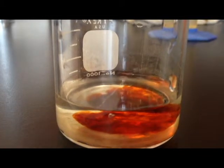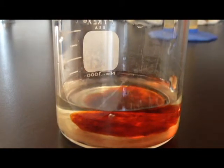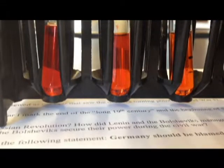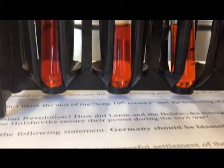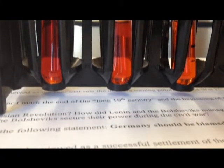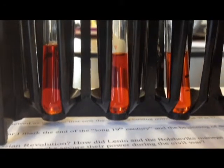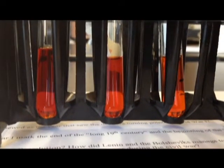We then aliquoted out 3 milliliter samples of this complex ion solution into 3 test tubes. To the first test tube, we added 20 drops of 0.1 molar iron nitrate. This resulted in a color change from red-orange to a deep red.